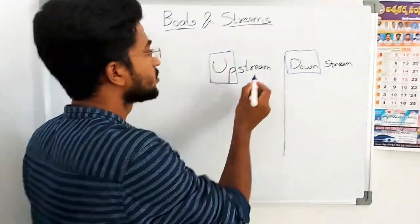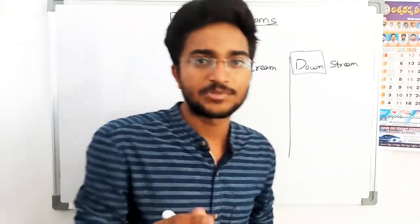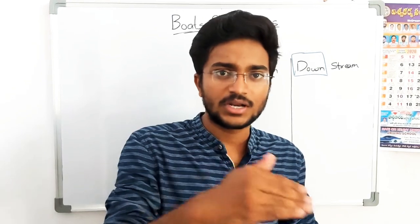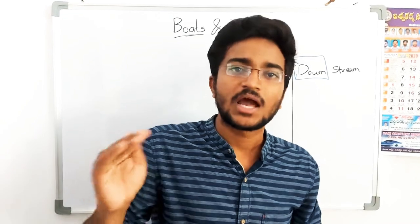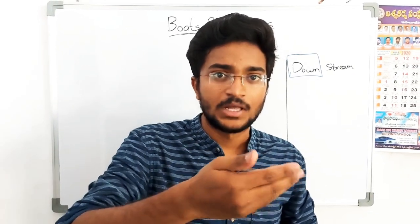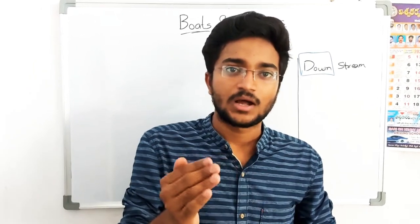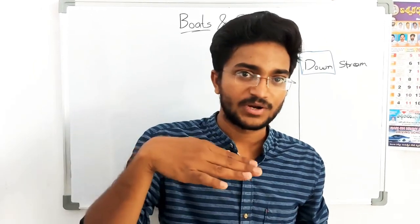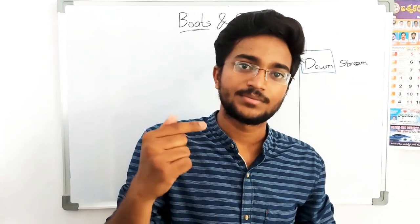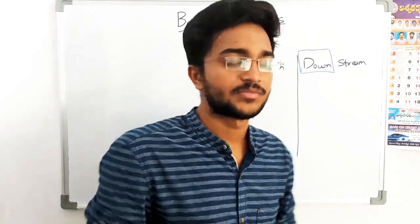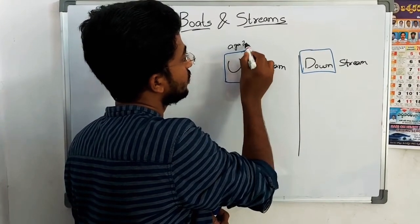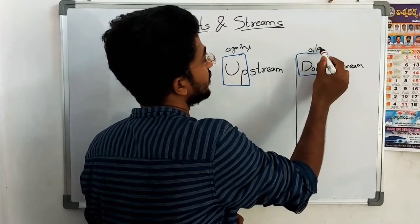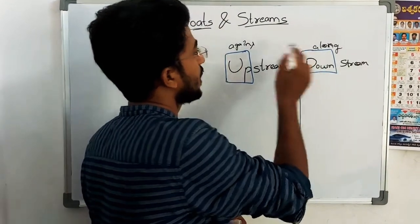So we have to understand upstream and downstream. Upstream is when the boat moves opposite to the direction of the river flow — that is, against the stream. Downstream means the boat moves along the stream — in the same direction as the river flow. So upstream means against the stream, and downstream means along the stream.